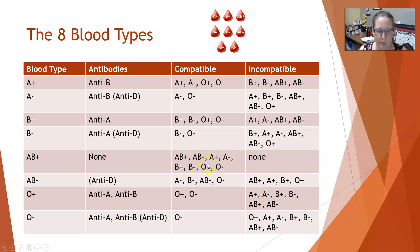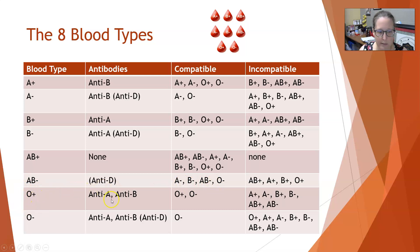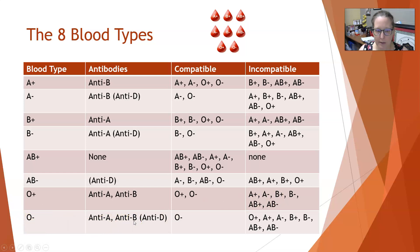AB positive has no antibodies, therefore they're compatible with everyone — they are the universal recipient. AB negative could potentially have anti-D, so you don't want to give them any Rh positive blood; only give them Rh negative blood, but you can give them any of the types in the Rh negative group. O positive patients will have both anti-A and anti-B antibodies in their serum and can only receive O positive or O negative blood. O negative patients have anti-A, anti-B, and potentially anti-D; they can only receive O negative and are incompatible with everything else.